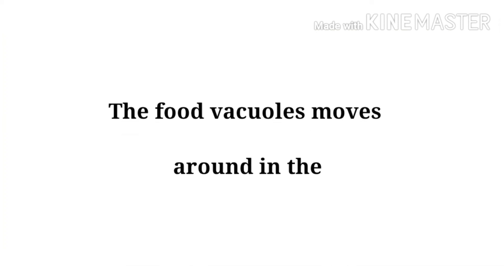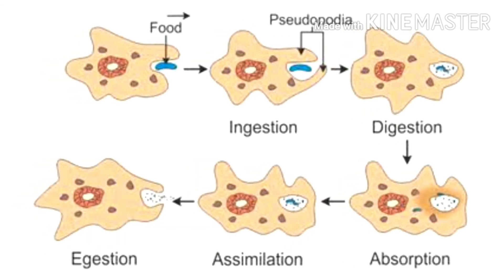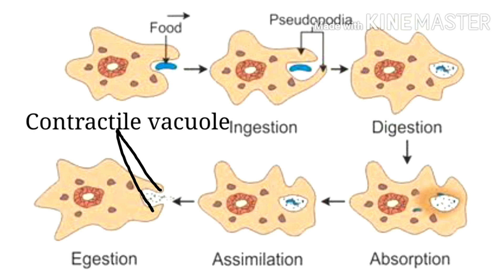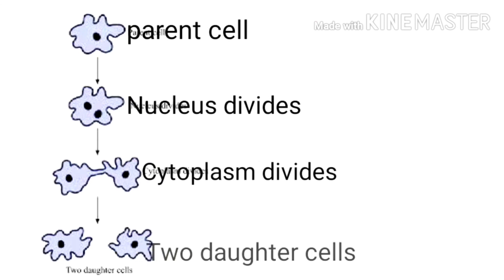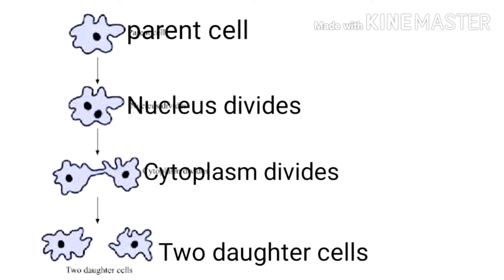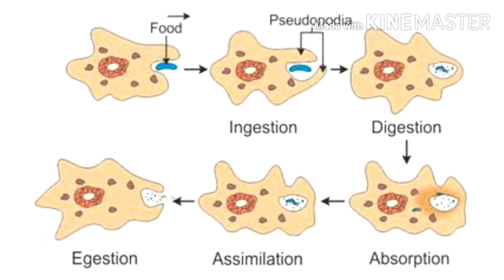The food vacuole moves around in the cytoplasm, where digestive enzymes help in the breakdown of food into simpler and soluble molecules. The digested food is then absorbed and assimilated, and the undigested food is thrown out of the body through the contractile vacuole at any point of the body, because amoeba has no anus. When amoeba grows in size, it divides into two daughter cells, which then divide further. This is how amoeba feeds and digests its prey.